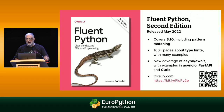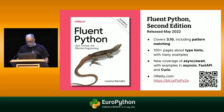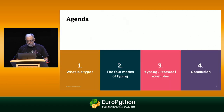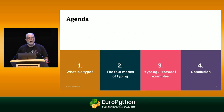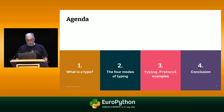That's my book. Almost everything that I'm going to show you today came out of a lot of research that I did while writing the book. The second edition has more than 100 pages about type hints and other new stuff. We're going to talk about four things: what is a type, the four modes of typing, some typing protocol examples, and a conclusion.